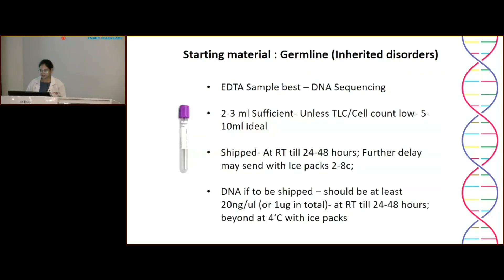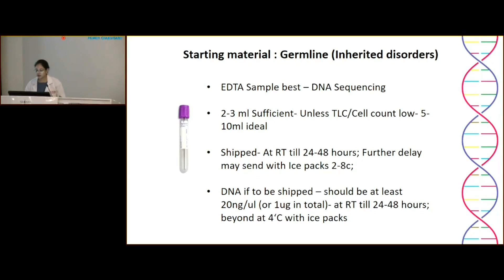For practical information on DNA sequencing: for germline inherited disorders, both Sanger and NGS require only EDTA blood samples, 2–3 mL is sufficient. Samples can be shipped at room temperature for 2–3 days; for further delays, ship on ice packs. For DNA samples, 1 microgram is sufficient and can be shipped at room temperature unless delays are expected.